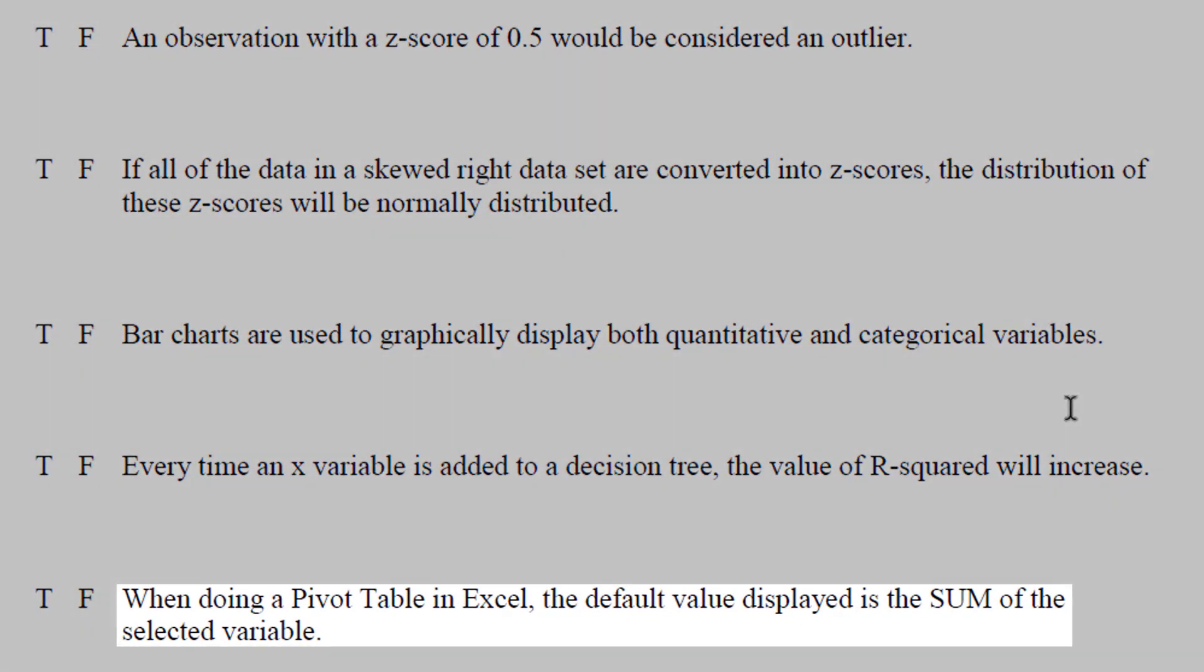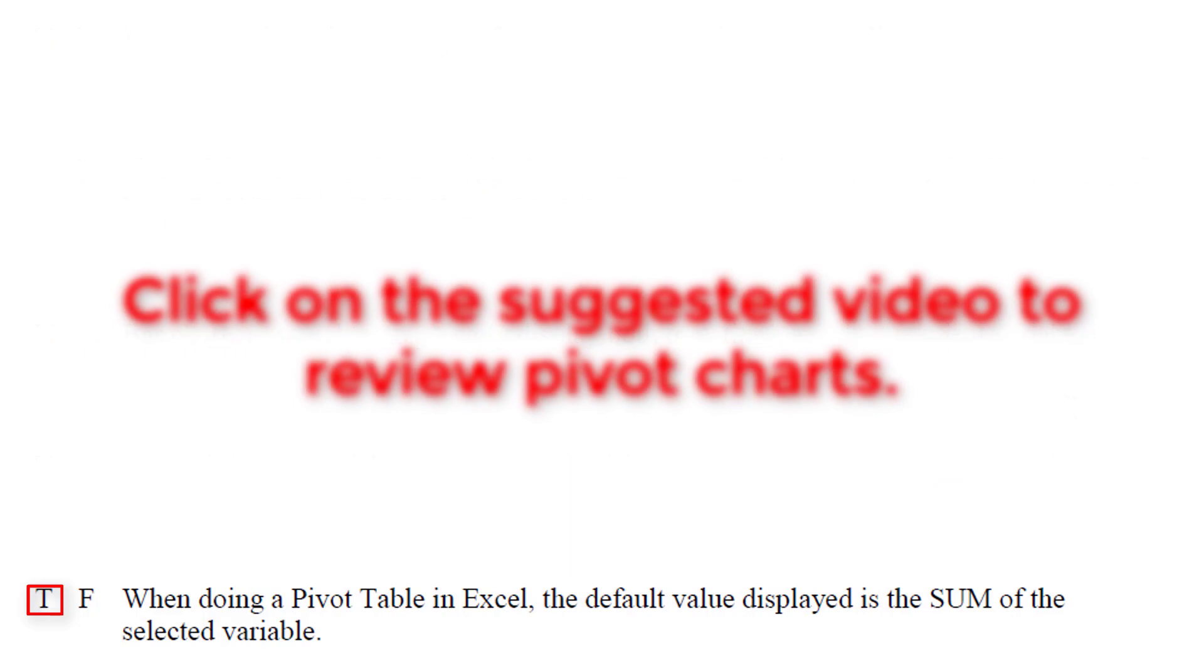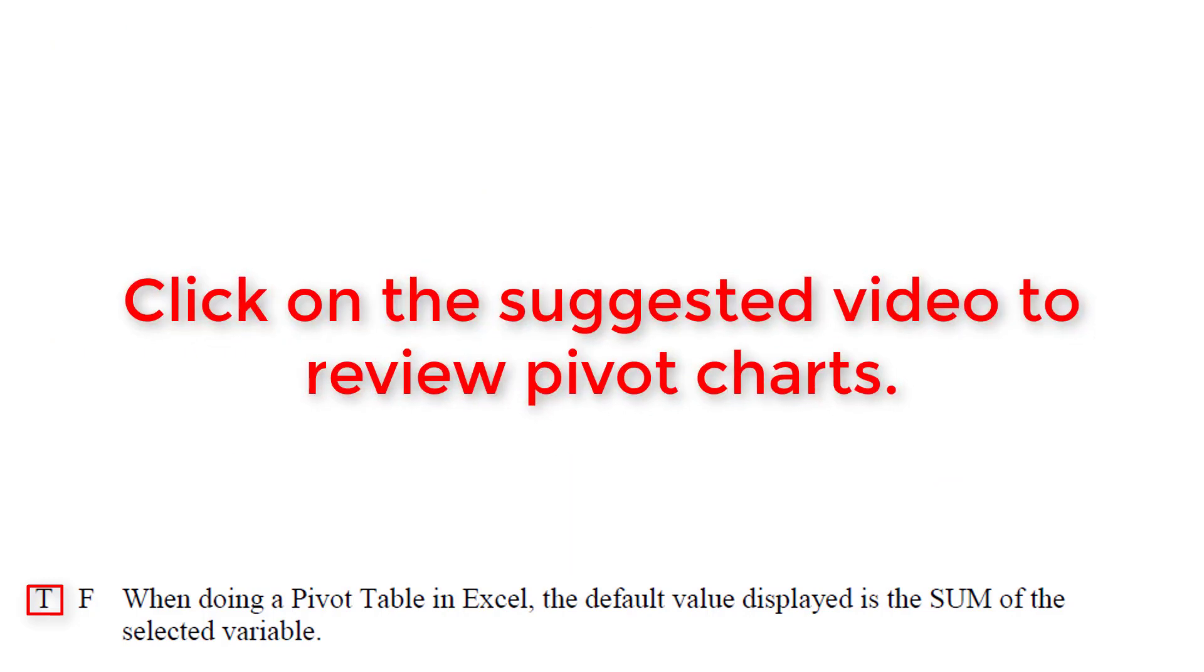When doing a pivot table in Excel, the default value displayed is the sum of the selected variables. This is definitely true. As you've noticed, you will get the sum every time you start when you put it into values displayed. So we'll just sum up everything, and then you can change it to average, you can change it to min, you can change it to max, there's lots of options.